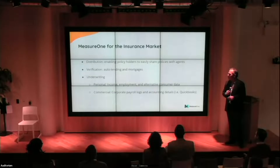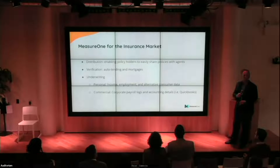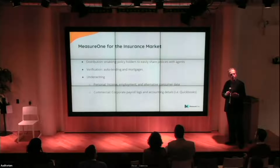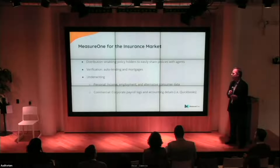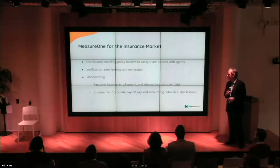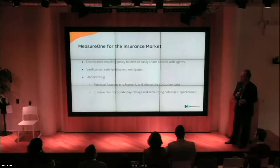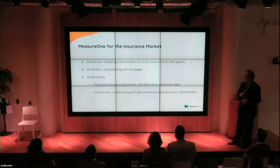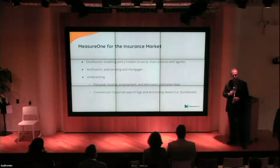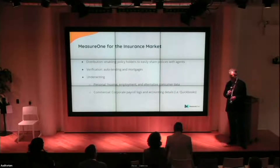In the insurance market, we're focused on three areas. First, distribution — enabling policyholders to easily share their policies with agents and brokers. Second, verification in the lending space for mortgages and auto lending. Third, underwriting — enabling access to income, employment, and alternative consumer data to better underwrite personal lines. We're also getting significant interest on the commercial side, enabling access to payroll logs and accounting details for commercial insurance underwriting.